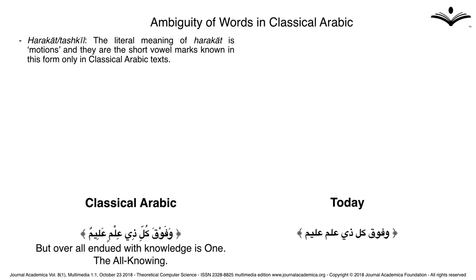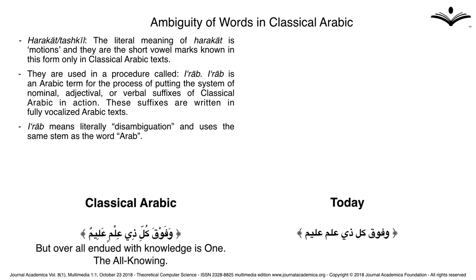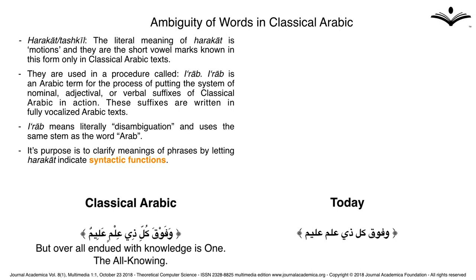When motions are written they are called tashkil. Harakat or tashkil are used in a procedure called i'raab. I'raab is an Arabic term for the process of putting the system of nominal, adjectival or verbal suffixes of classical Arabic in action. These suffixes are written in fully vocalized Arabic texts. I'raab means literally disambiguation and uses the same stem as the word Arab. Its purpose is to clarify meanings of phrases by letting harakat indicate syntactic functions.